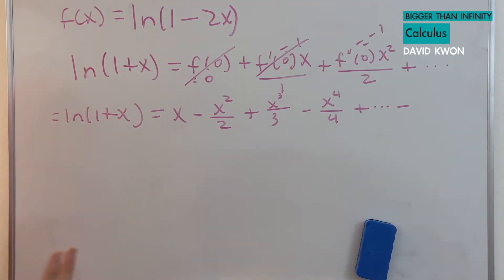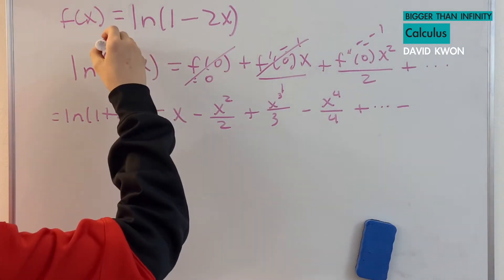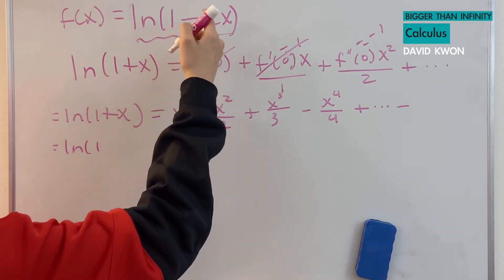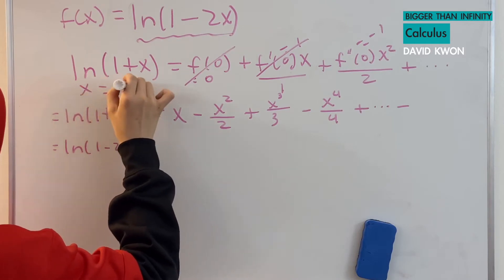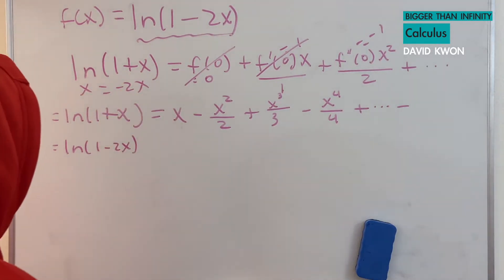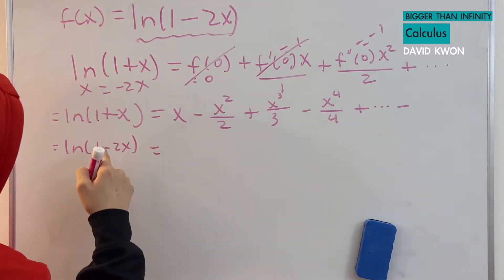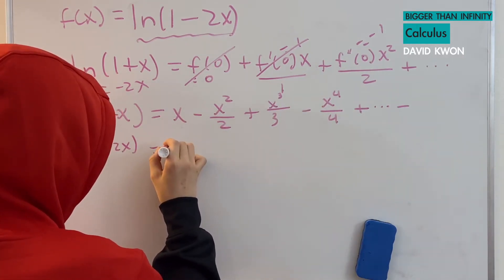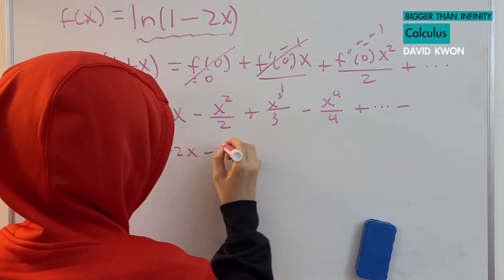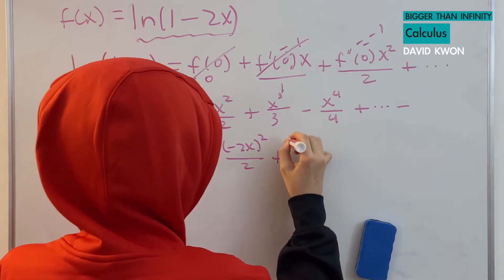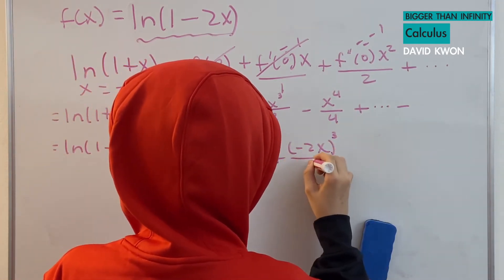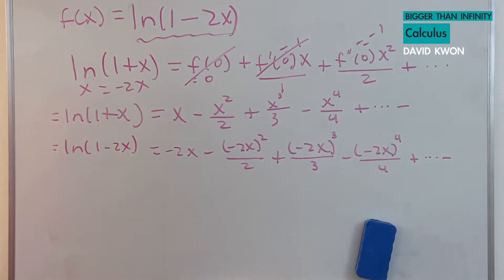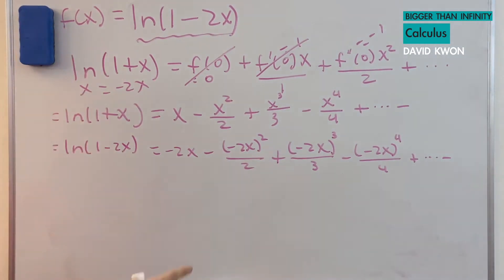Our first question asks us to find the power series for this. If I substitute negative 2x for the x value — so x becomes negative 2x — that goes into each term. So we get negative 2x, then minus (negative 2x) squared over 2, plus (negative 2x) cubed over 3, minus (negative 2x) to the power of 4 over 4, and then plus dot dot dot. Everything looks fine, and now I can do some more simplifications.